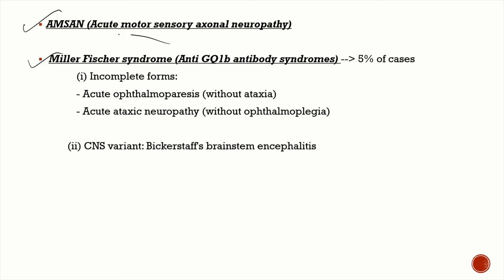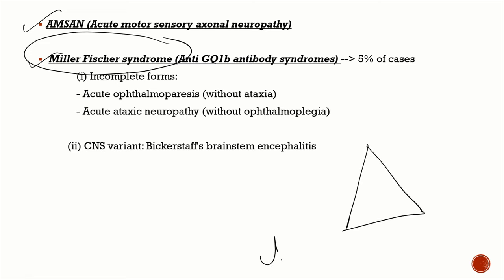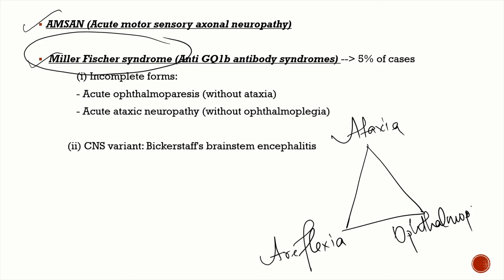A very important variant is Miller-Fisher Syndrome, characterized by the triad of areflexia without weakness, ataxia, and ophthalmoplegia. This ophthalmoplegia is complete — both external and internal, meaning even the pupillary reaction is involved. Miller-Fisher Syndrome is classically associated with anti-GQ1b antibodies, and its variants form the anti-GQ1b antibody syndrome spectrum, comprising five percent of all GBS cases.